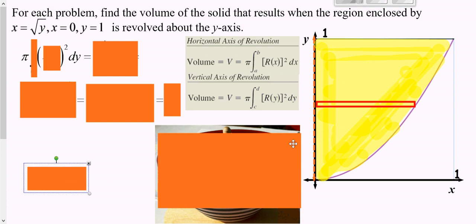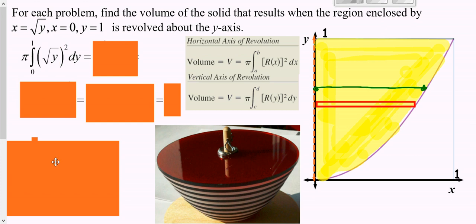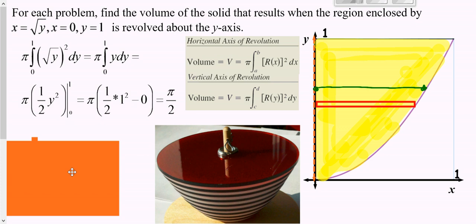If you revolve that shape you get something like a big solid bowl. Your bounds, because you're dealing with y's, are how far up and down you go — from zero to one. Your radius goes from what's on the right to what's on the left, which is your function minus zero. Square that and you just get y. Integrating y is pretty easy — evaluate it, plug in 1 minus what you get at zero, and we get pi over 2.